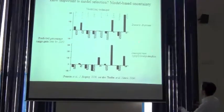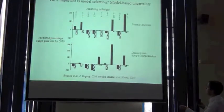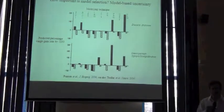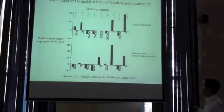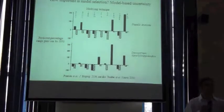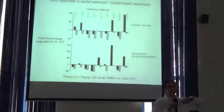We then made predictions, these are two species of Proteaceae, we made predictions under current and future climate scenarios. It's actually a scenario for the 2030s, and then we calculated the predicted range gain or loss under those climate scenarios.